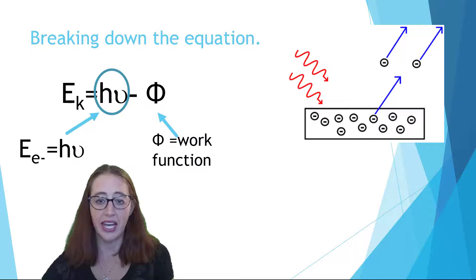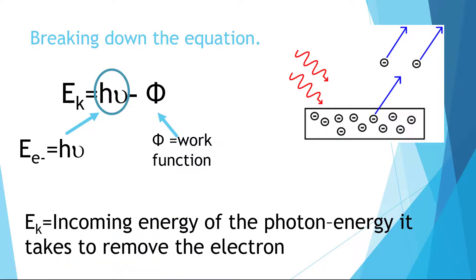So if we think about what this means in words, all this equation says is that the energy of the photon that is shined on the metal goes first to removing the electron, and that any leftover energy is given to the electron as kinetic energy. It's really just one very particular usage of the conservation of energy.